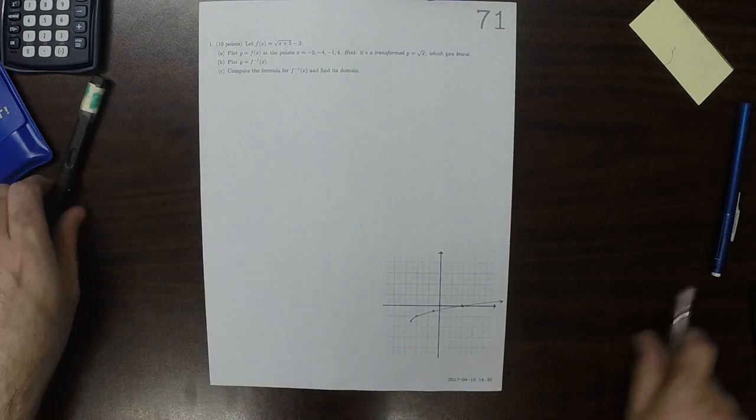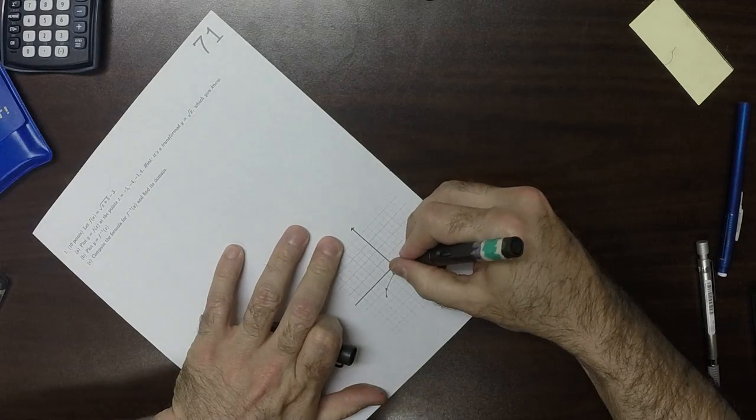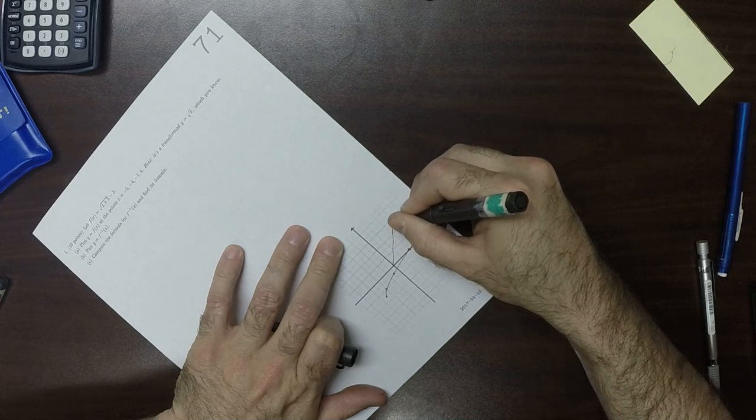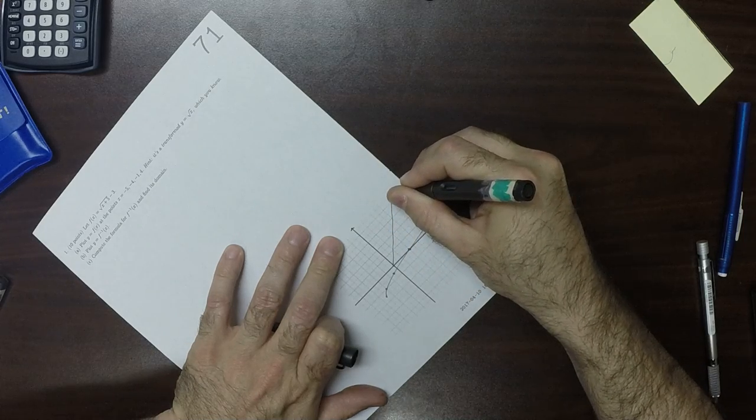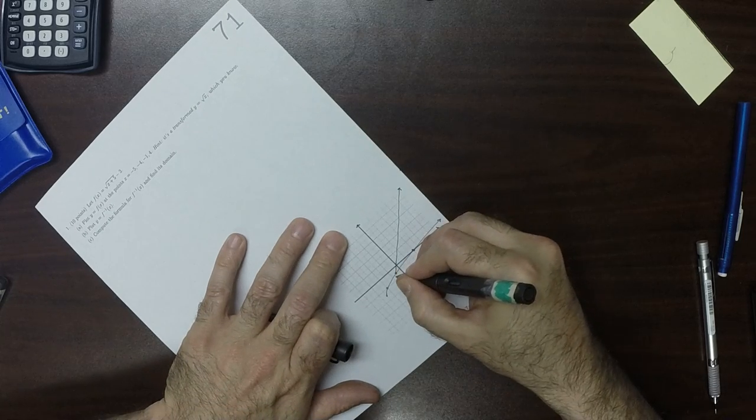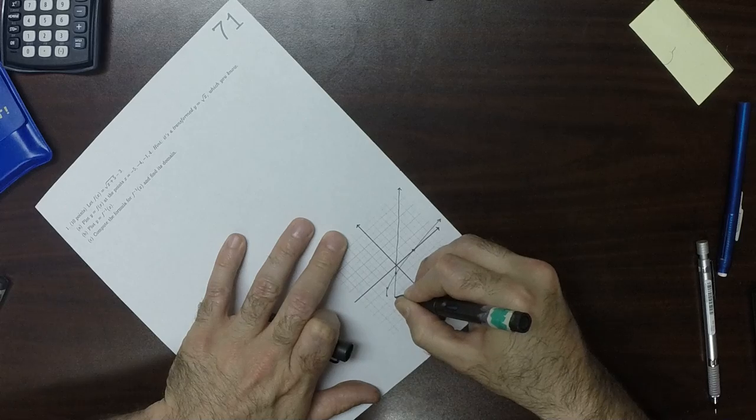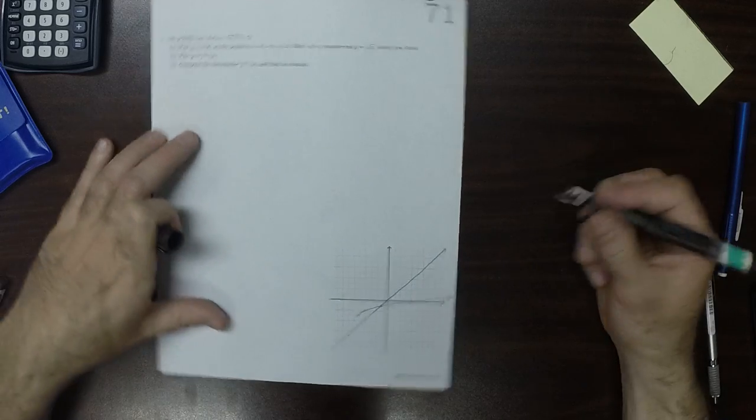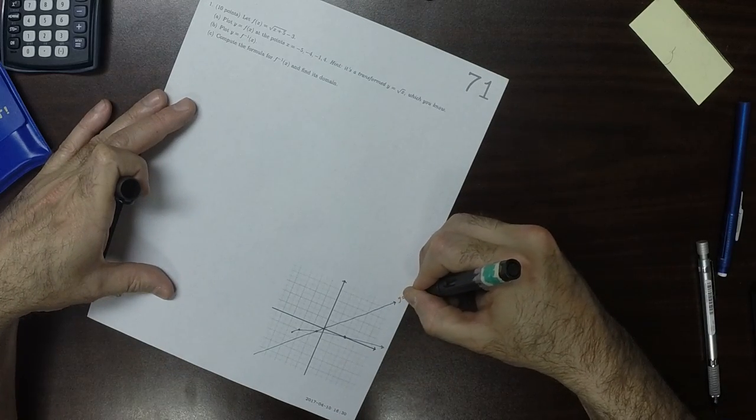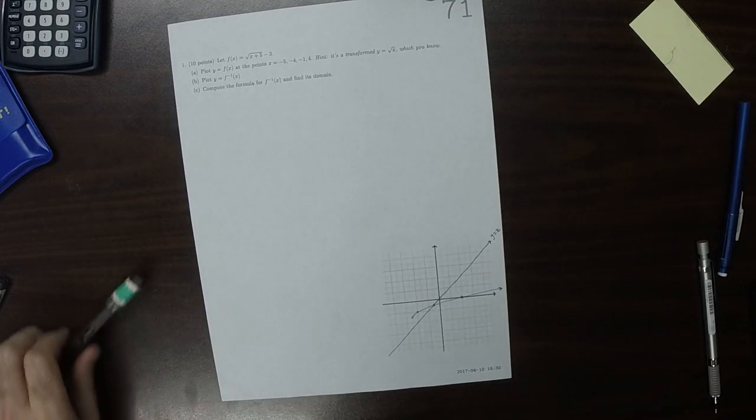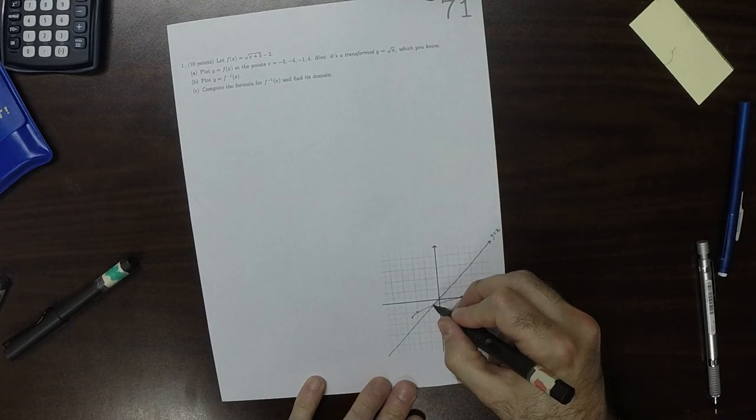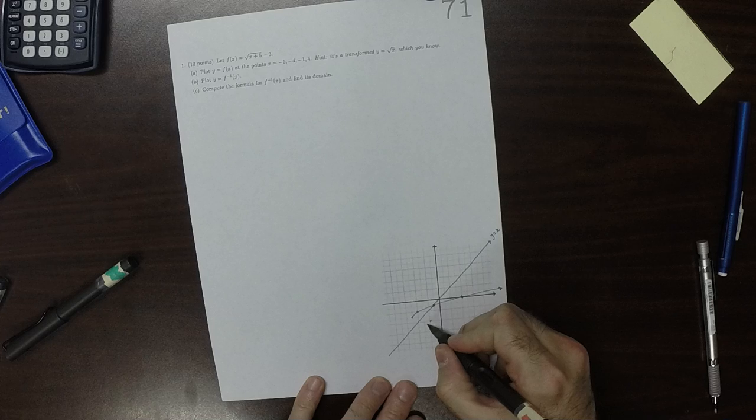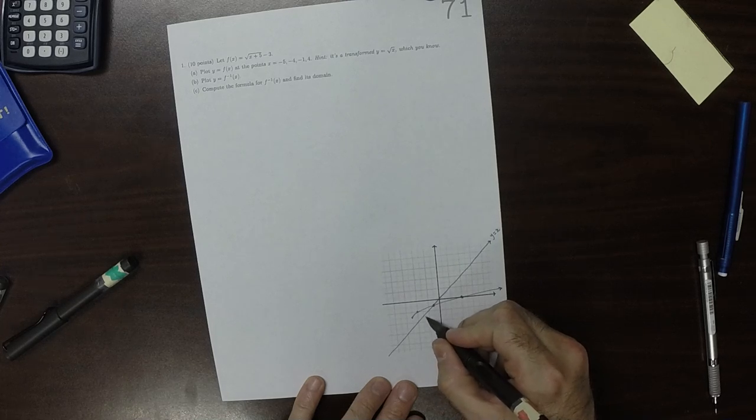Plot the inverse. So to plot the inverse, that's y equals x. To plot the inverse, we need to reflect all these points. Well, this point reflects to itself.